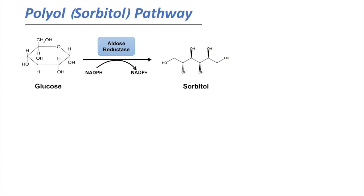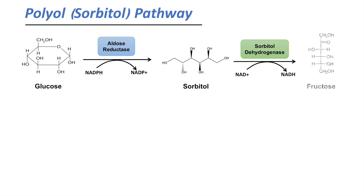Once the cell has sorbitol, it will convert the sorbitol to fructose by the enzyme sorbitol dehydrogenase. It does this by utilizing NAD+ and reducing NAD+ to NADH. So you're actually acquiring an NADH out of this reaction and you're also getting fructose.